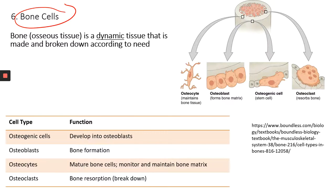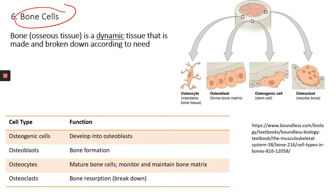Next, we're going to look at bone cells. Bone is actually a very dynamic tissue — it's constantly made and broken down according to need. Where you have to have more strength to resist pressure and stress, different bone cells achieve this constant remodeling.